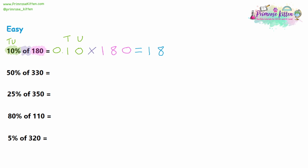Moving on to question two, we use exactly the same method. We type the percentage in first: 50%. The tens column is the first decimal place and the units column gives us zero for the second decimal place. Then it says 'of', so we're multiplying. This time we have 330. So if you type into your calculator 0.50 multiplied by 330, you should get 165 as the answer.